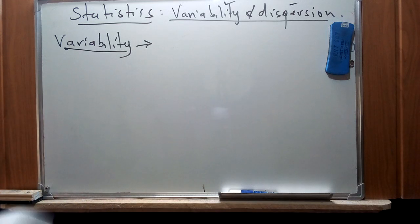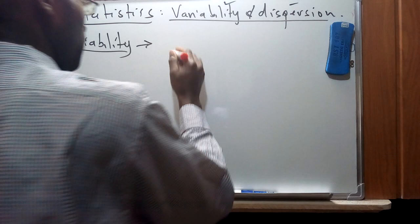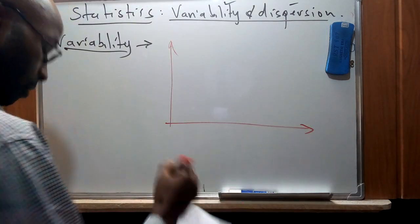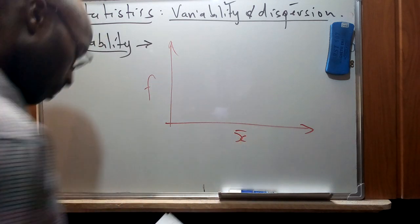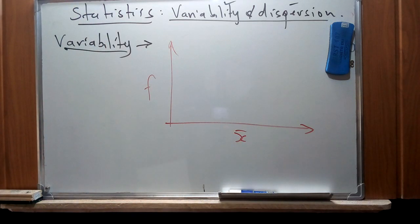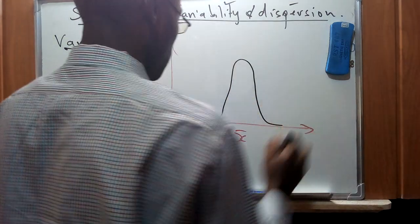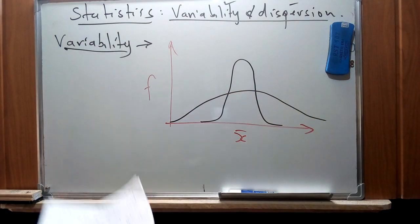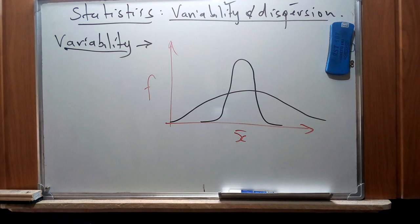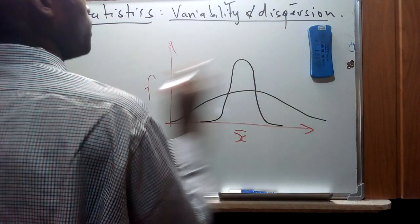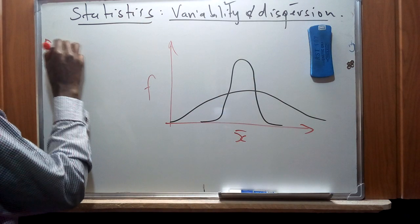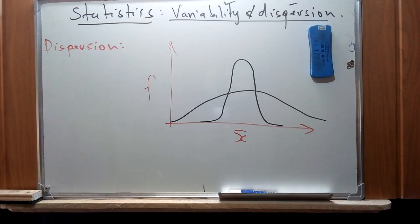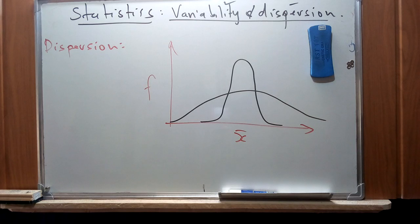For the concept of dispersion we are going to use a frequency graph with the center of dispersion marked. We will have a first and a second distribution curve. If there is a distribution of data giving a certain shape, this will help explain the concept of dispersion.